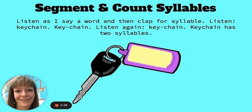Segment and count syllables. Listen as I say a word and then clap the first syllable. Listen: key chain. Key chain. Listen again: key chain. Key chain has two syllables.